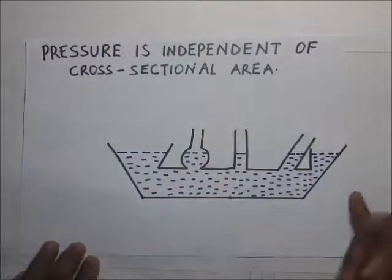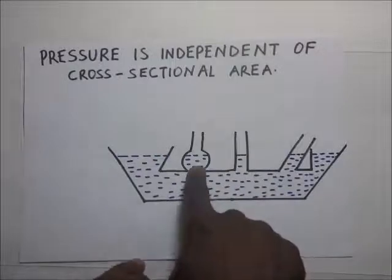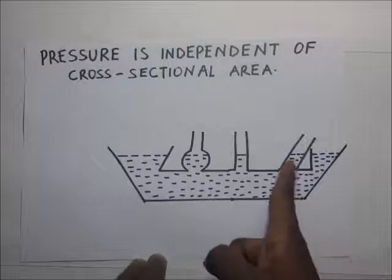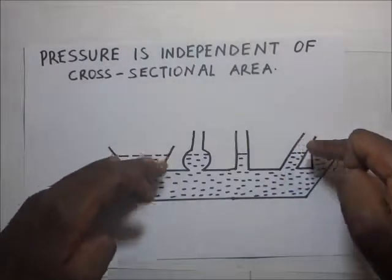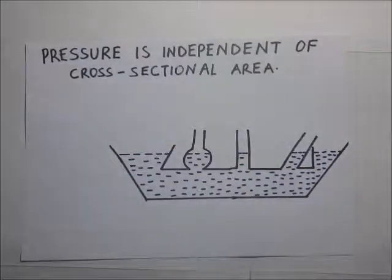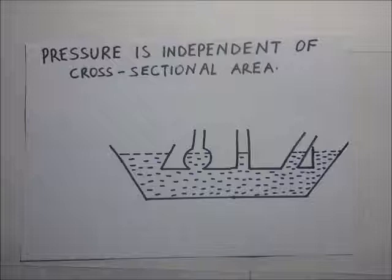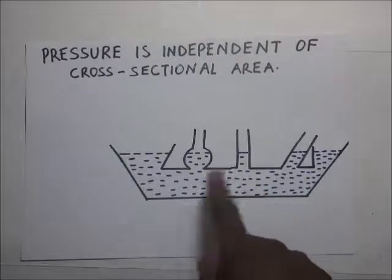This flask was initially empty, but when we pour water into it, the water levels rise to the same height in the round-shaped protrusion, the cylindrical protrusion, and the slanting cylindrical protrusion throughout the entire flask. This shows that pressure at the same ground level is the same and is independent of the cross-sectional area.